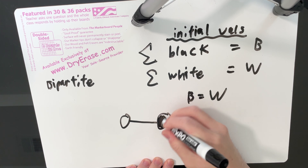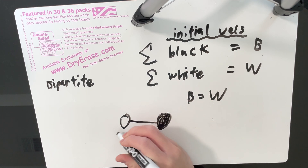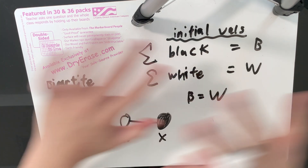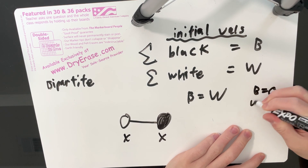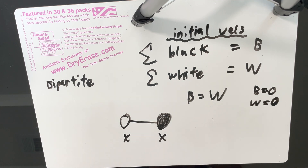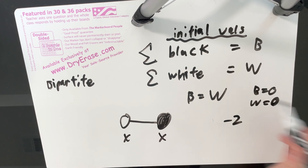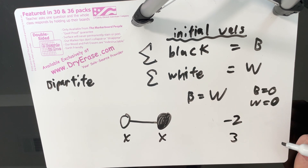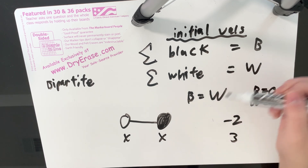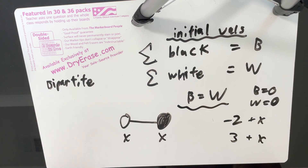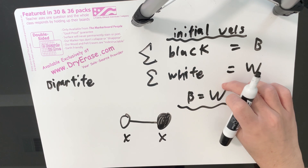Our goal is to make all nodes equal to zero, so we want B equal to zero and W equal to zero. Say the sum of all black values is currently negative two and the sum of all white values is three. We want both to equal zero. The only way to make the sum of all black and the sum of all white equal zero is by increasing or decreasing them together, so we can never make both zero unless B equals W. That's the condition: the sum of black must equal the sum of white if the graph is bipartite.